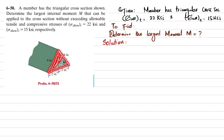Let's start with the solution. We know that in general, the maximum bending stress is equal to moment times c divided by I. We will first find I, and for section properties we will also need the location of the neutral axis from the base.